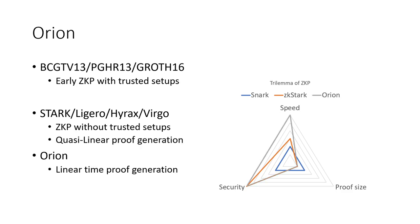The second generation of Zero-Knowledge Proofs has quasi-linear proof generation time. In our new work, we further reduce the proof generation time from quasi-linear to linear time. At the same time, we keep the security — so we don't have a trusted setup — and we keep roughly the same proof size as the second generation. So in our work, we are purely improving the speed without sacrificing other parameters.